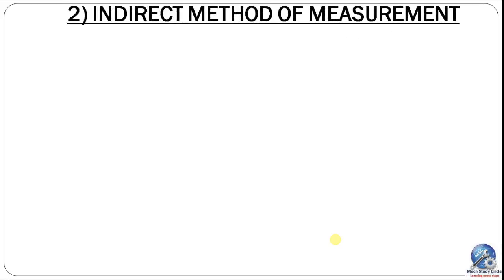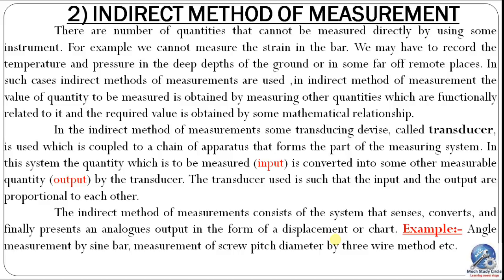Next, the indirect method of measurement. There are quantities that cannot be measured directly — for example, we cannot measure strain in a bar directly, or we may need to record temperature and pressure in deep ground or remote places. In the indirect method, the value is obtained by measuring other quantities functionally related to it, and the required value is obtained by some mathematical relationship. A transducing device called a transducer is used, converting the quantity into another measurable quantity.